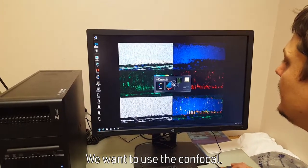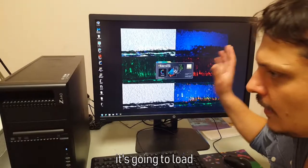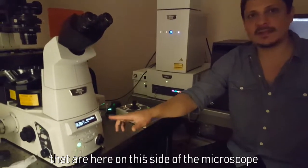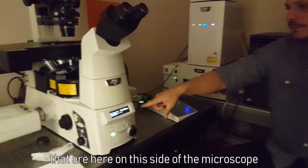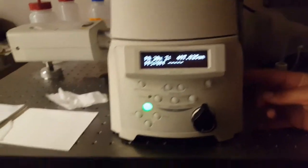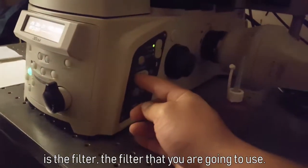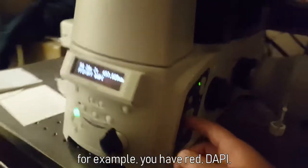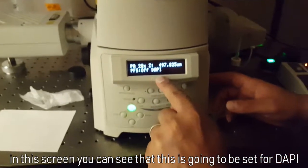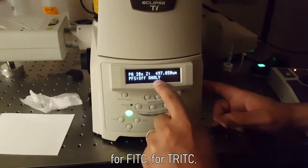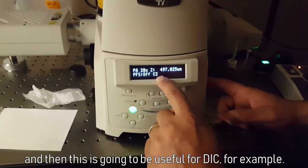I'm going to use the confocal. It's going to load the works that are here in this side of the microscope. What you can change with these two volumes is the filter that you are going to use. For example, you have red DAPI. In this sense, you can see in here it is going to be set for DAPI, for FITC, for TRITC, and then this is going to be used for DIC for example.